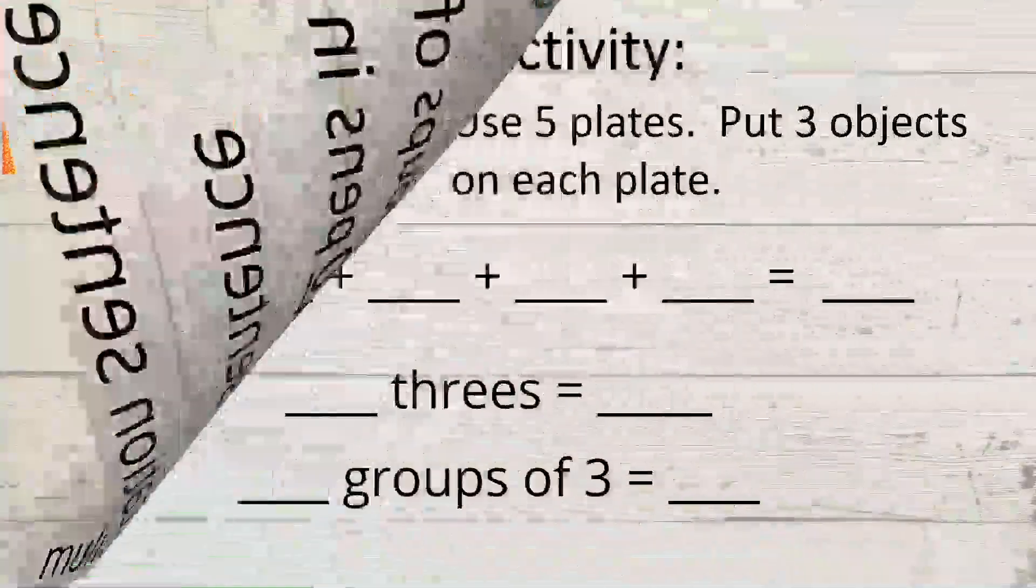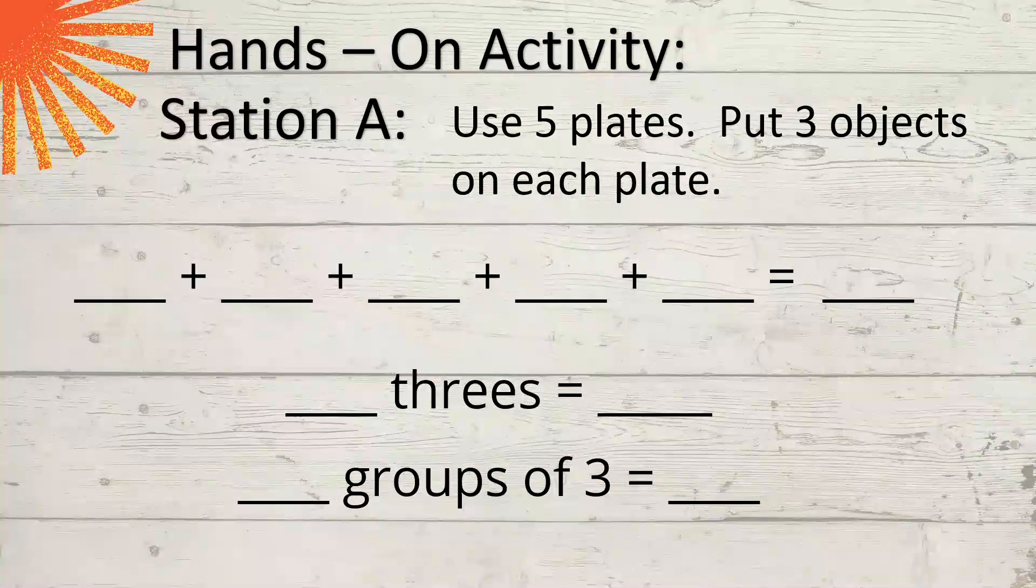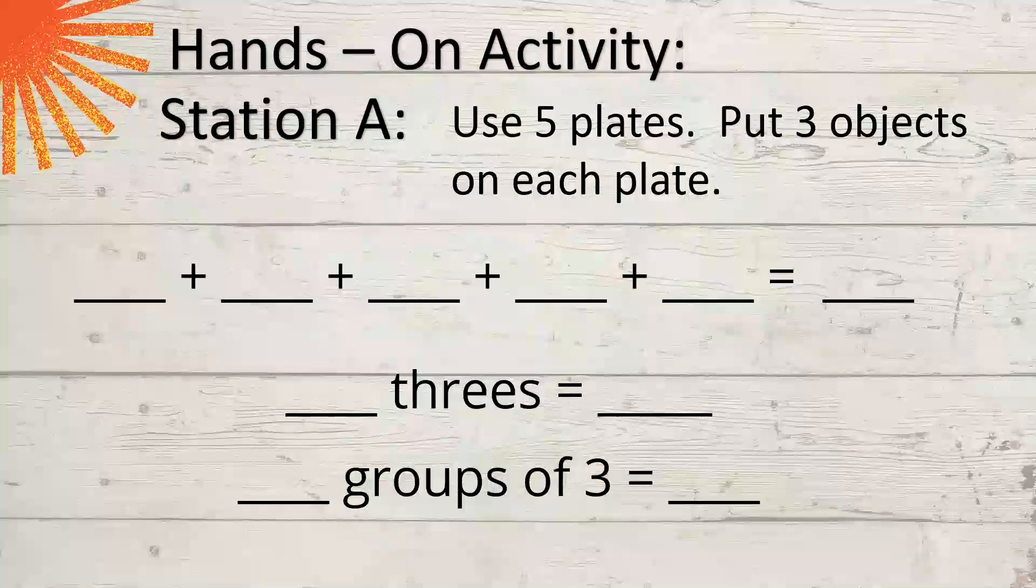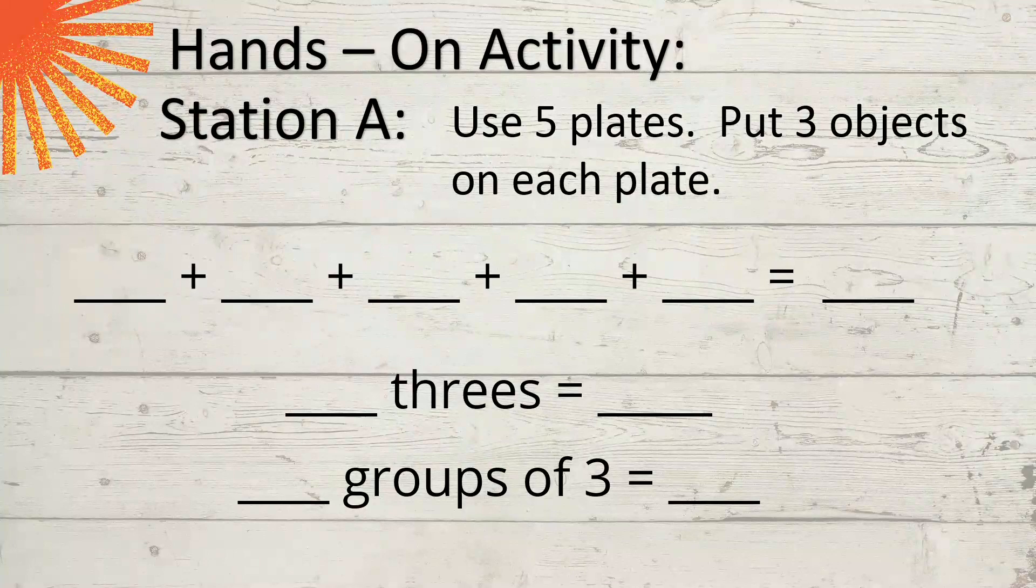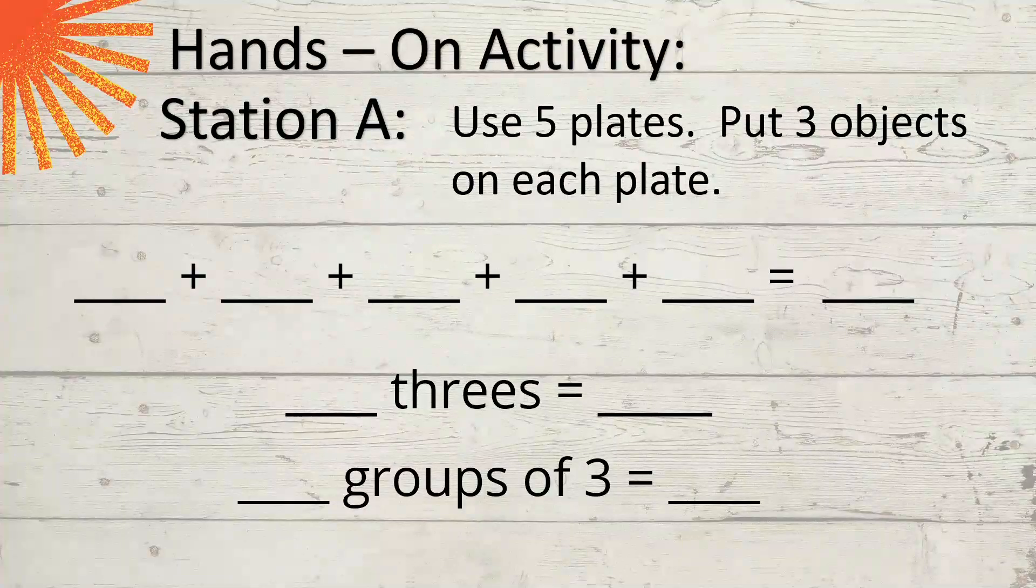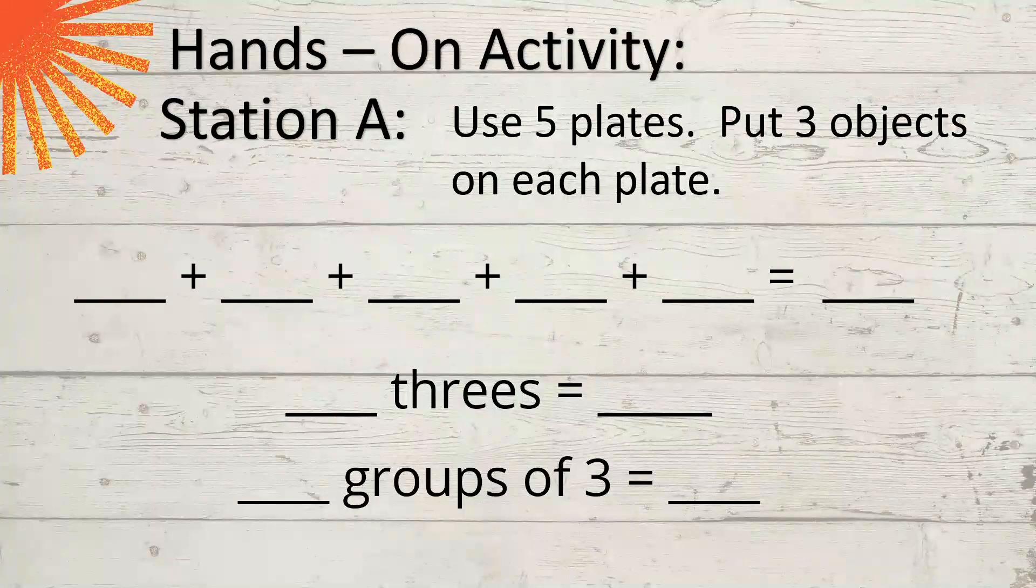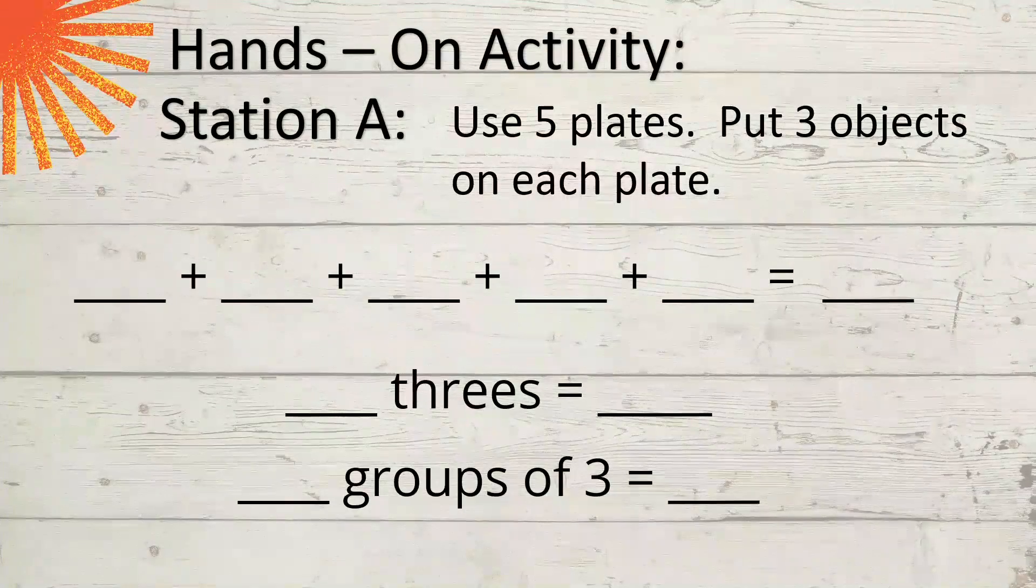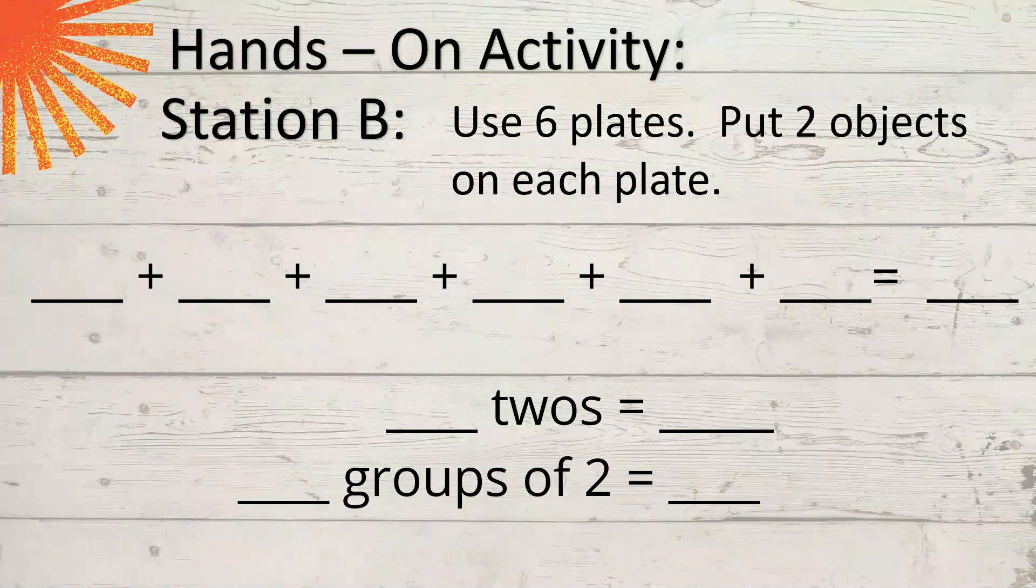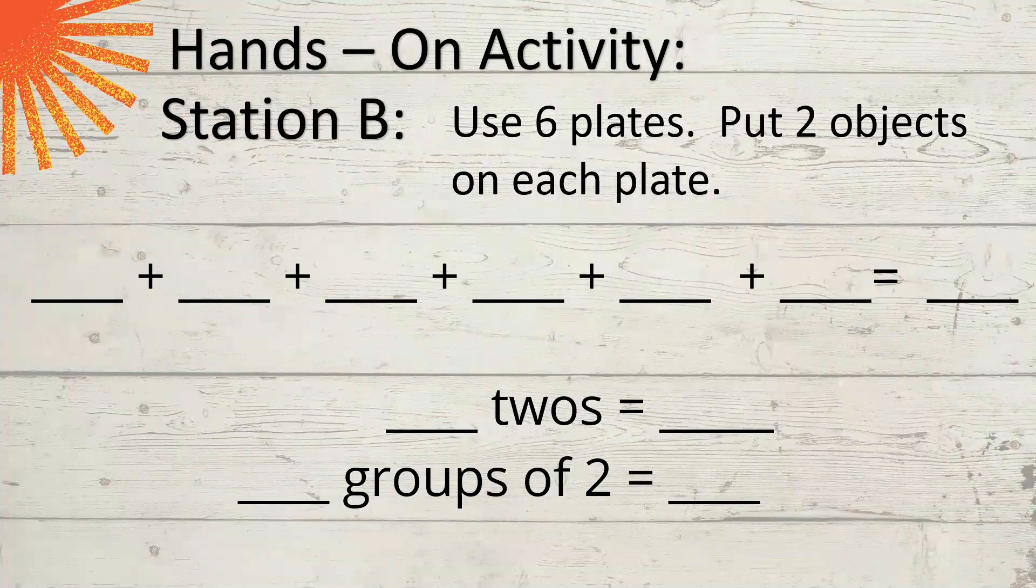For children, you can have this hands-on activity. You can try this in your house. So for your station A, you get 5 plates, put 3 objects on each plate. Any objects that you have in the house, available in the house. Then complete this. And then you can also have another station. This time use 6 plates and put 2 objects on each plate. You can practice.